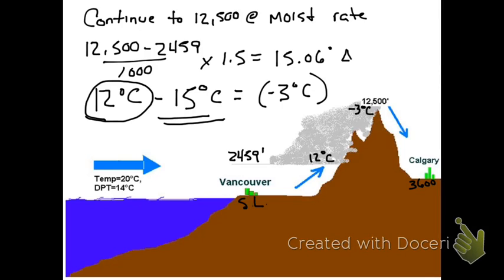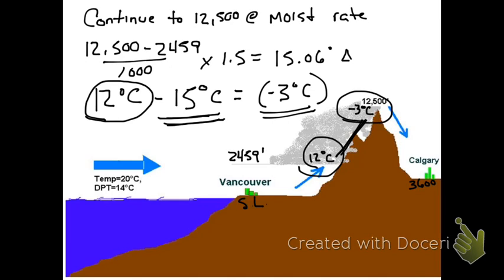We find the temperature at the peak by taking the temperature at the cloud base — 12 degrees Celsius — and subtracting the change in temperature through the moist adiabatic process — 15 degrees Celsius. This gives us negative 3 degrees Celsius at the mountaintop, or 12,500 feet.